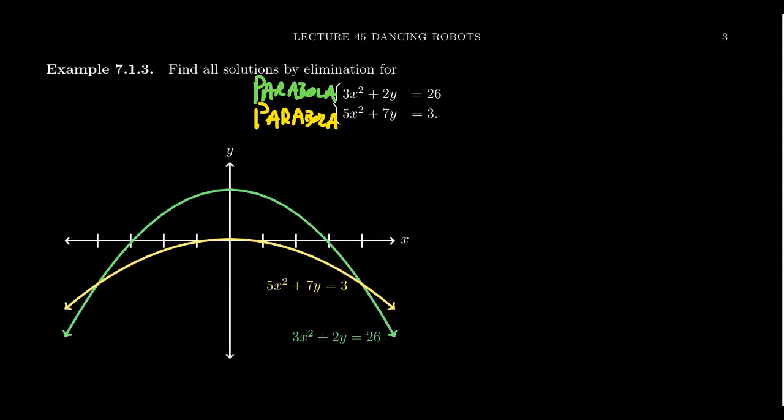But even better — we have x² in both the first and second equation. If I could cancel out the x² terms by adjusting the coefficients, that would be phenomenal, because x² terms can be much more complicated than the y terms. So that's the direction I want to go — let's eliminate the x² terms.